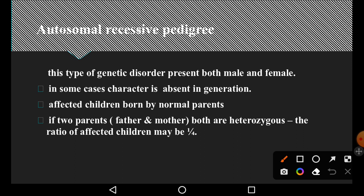This type of genetic disorder is present in both male and female. In some cases, this type of character is absent in a generation. It is not that in all generations or all children this disorder will be able to see, but this disorder can also be able to see in generation.